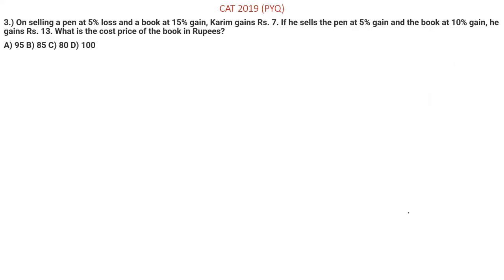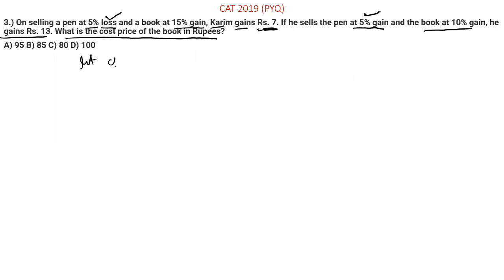Moving to the third question. On selling a pen at 5% loss and a book at 15% gain, Kareem gains 7 rupees. If he sells the pen at 5% gain and the book at 10% gain, he gains 13 rupees. What is the cost price of the book in rupees? Let the cost price of pen be 100P and book be 100B.